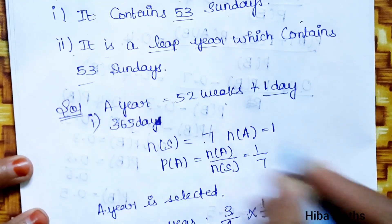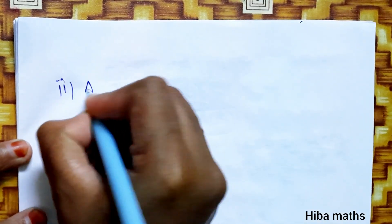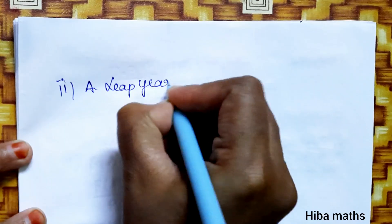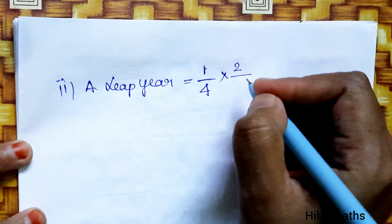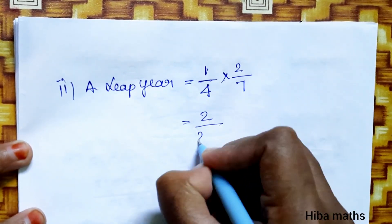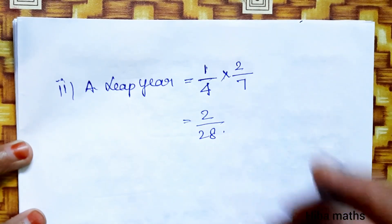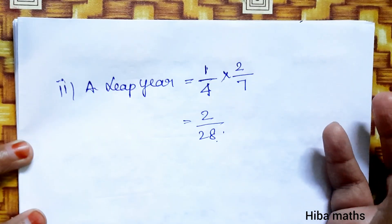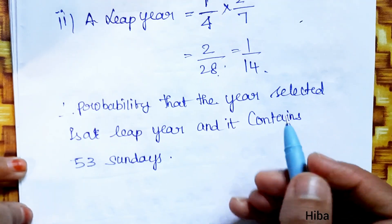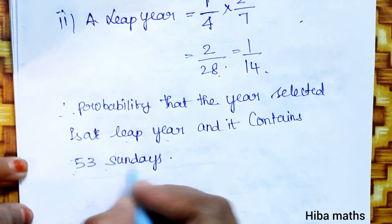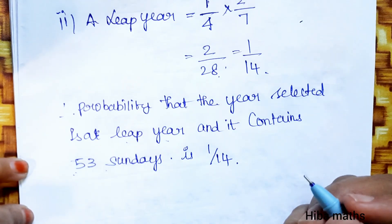This is the first subdivision. Now the second subdivision: it is a leap year. A leap year occurs once every 4 years, and the probability that it contains 53 Sundays is 1 by 14. Thank you so much for watching.